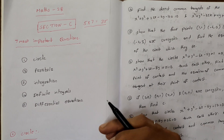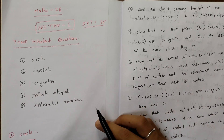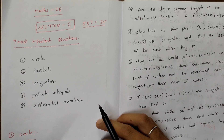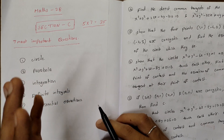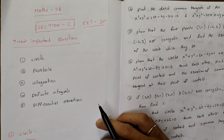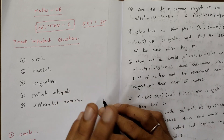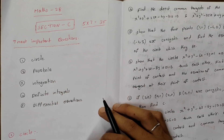Friends, in this video we have two big mathematics topics in Section C. The 7-mark questions are very important. We have included previous years' question papers and important question papers. We will add 7 marks to 5 questions. Mathematics 2B, senior and intermediate.